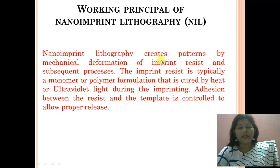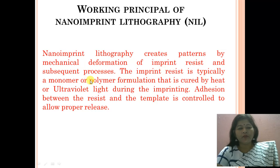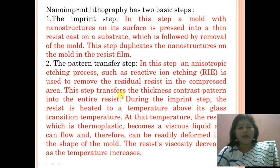The basic working principle of nano imprint lithography: it creates patterns by mechanical deformation of imprint resist and subsequent processes. The imprint resist is typically a monomer or polymer formulation that is cured by heat or ultraviolet light during imprinting. Adhesion between the resist and the template is controlled to allow proper release. This technology basically has two steps: the imprint step and the pattern transfer step.